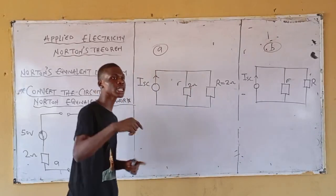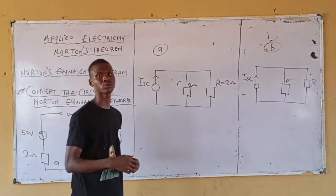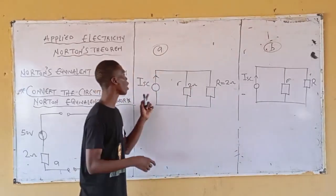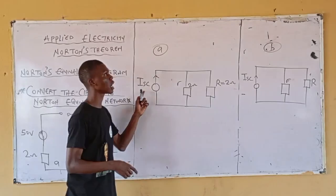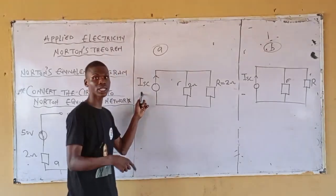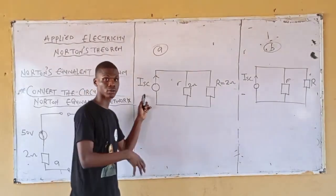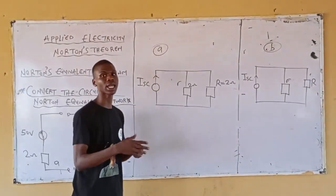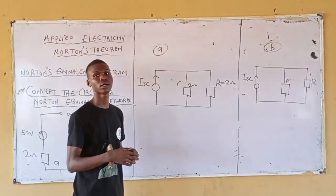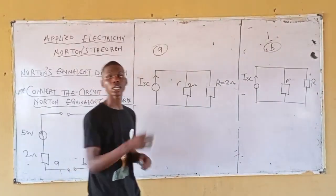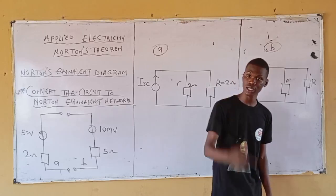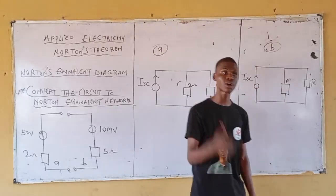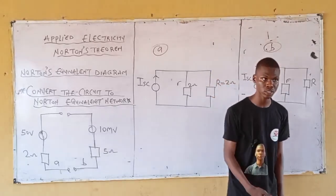Now, the ISC — short circuit. What is the idea of the short circuit? I want to know the value of ISC, meaning the short circuit current for A. How do you calculate ISC? It is the current in the branch of the load resistor.